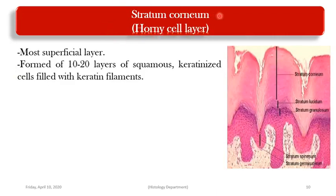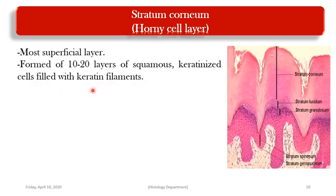The fifth and last layer of the epidermis is the stratum corneum, or horny cell layer. This is a very thick layer and the most superficial, formed of about 10 to 20 layers of squamous keratinized cells. The cells here have completely lost their nuclei and organelles and have become fully keratinized — fully packed with keratin filaments.